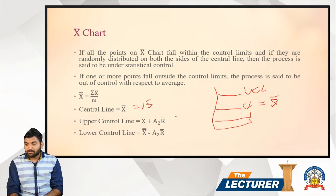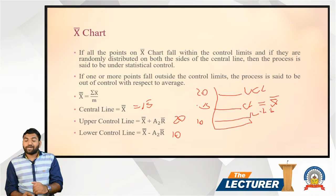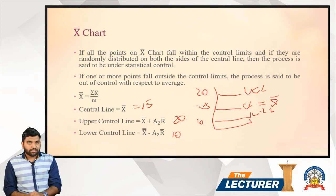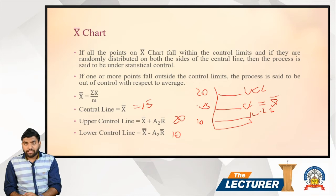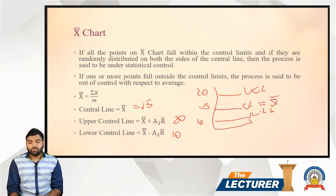Suppose our central line is 15, the upper control line is 20, and the lower control line is 10. So we put 10 for lower control, 15 for central, and 20 for upper. If the sample value is between 10 and 20, the process is known as a controlled process; if not, then this process is known as out of control.